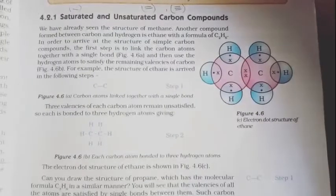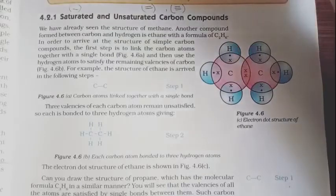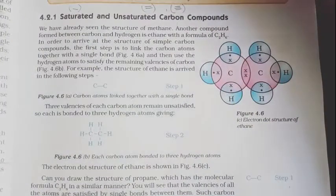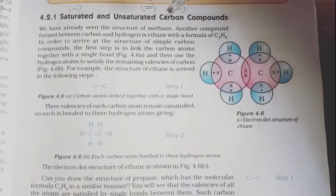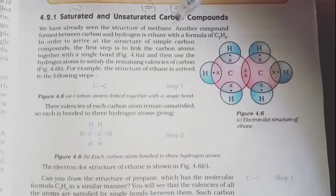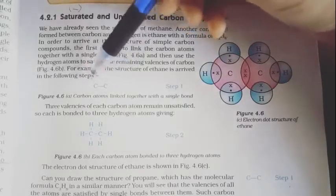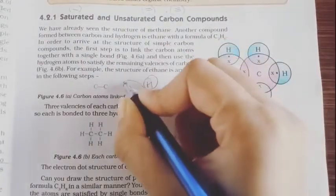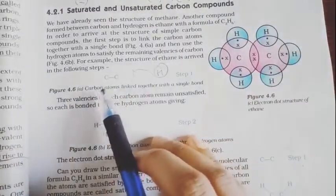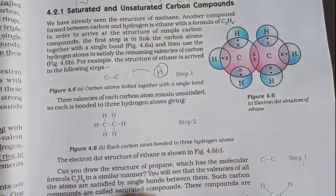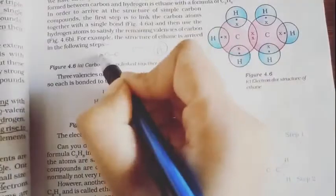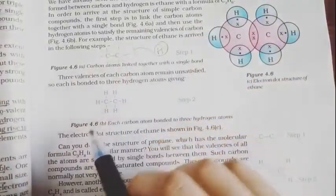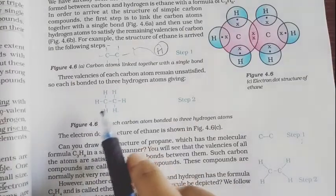The next topic is saturated and unsaturated carbon compounds. Saturated carbon compounds contain single bonds, and unsaturated carbon compounds contain double or triple bonds. Let's take an example of ethane, C2H6. Each carbon atom is bonded with three hydrogen atoms.